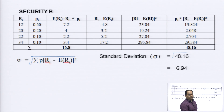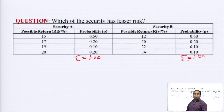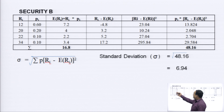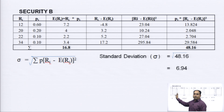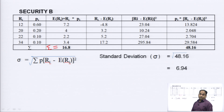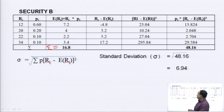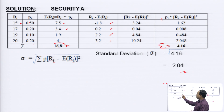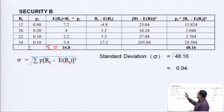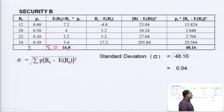The same calculation is performed for Security B. These are the returns given in the question, and the respective probabilities. We multiply each possible return with its probability and calculate the expected return. The total expected return for Security B is exactly 16.8 — the same as Security A. This is a coincidence in this particular question.